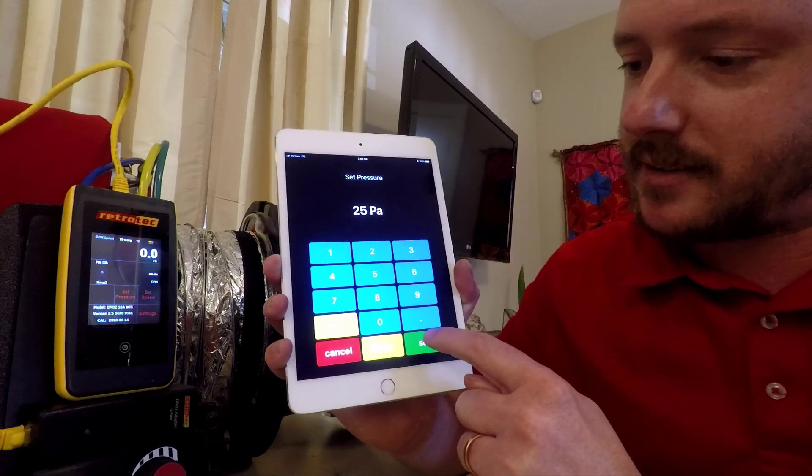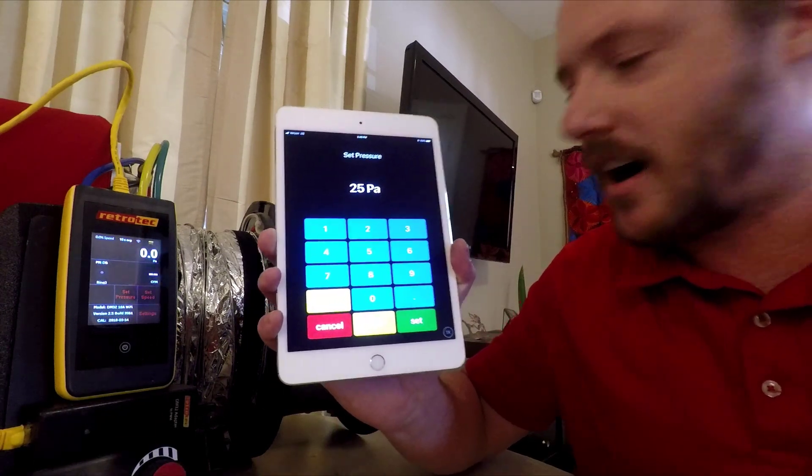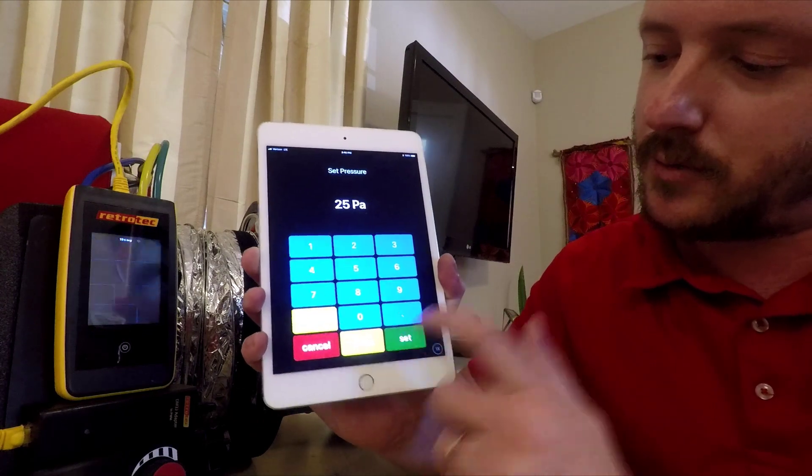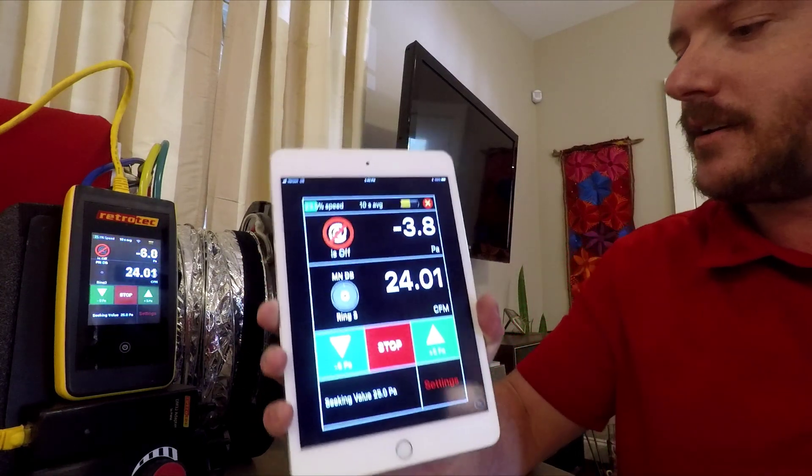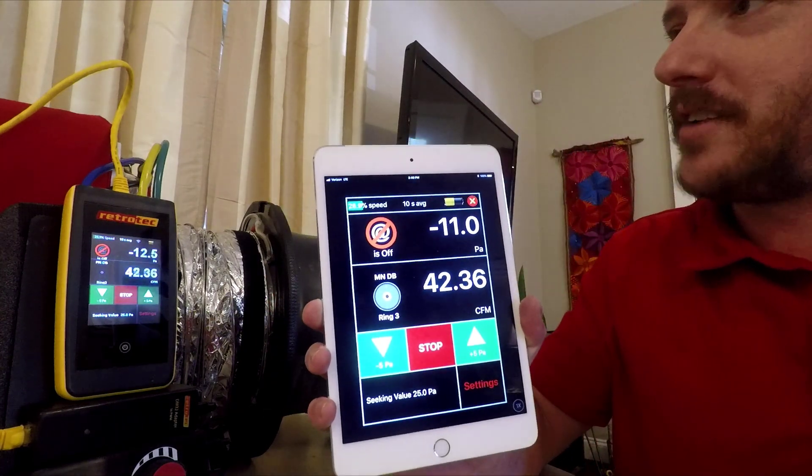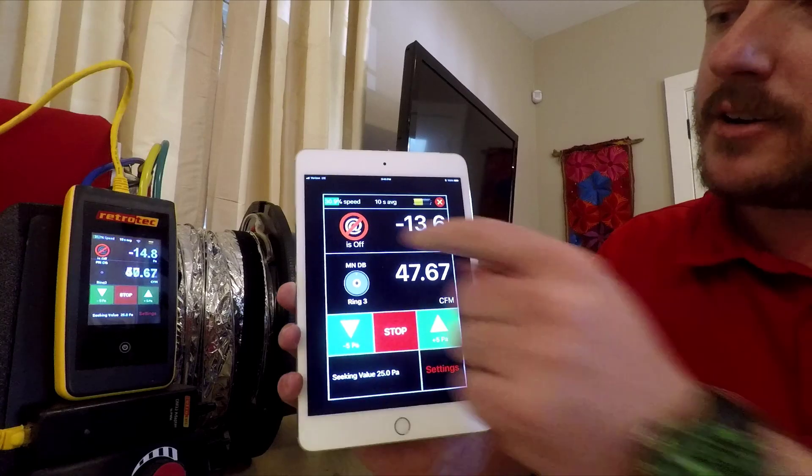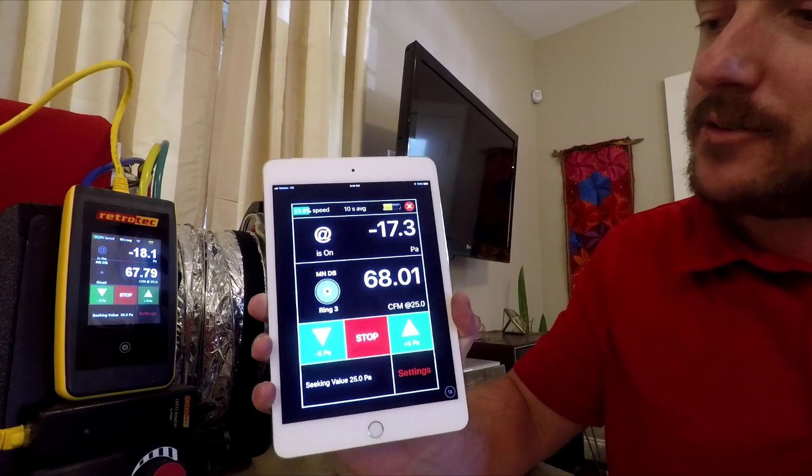And once we hit set, we'll make sure that our speed control is on. We'll hit set. And now the fan has kicked on. It's a little noisy. We'll go ahead and have it extrapolate to 25 automatically.